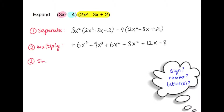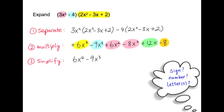The third part is I want to simplify — are there any like terms I could add or subtract? I have an x to the power of 4 term, an x to the power of 3 term, two x squared terms (6x squared and minus 8x squared), an x term of 12x, and a constant number at the end. The only things I can combine are 6x squared and minus 8x squared: 6 minus 8 is minus 2. So the final answer is 6x to the power of 4 minus 9x cubed minus 2x squared plus 12x minus 8.